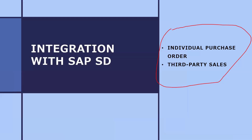They also asked what is the item category group. First they asked: what is the process? You have to say — customer walks in, a sales order will be created. Based on the sales order, a purchase requisition will be created. Based on the purchase requisition, a purchase order will be created, then goods receipt, then vendor invoice. From the SD side, it is customer issue and customer billing. MM and SD are closely integrated. The customer gets the material from the vendor — this is what individual purchase order is all about.